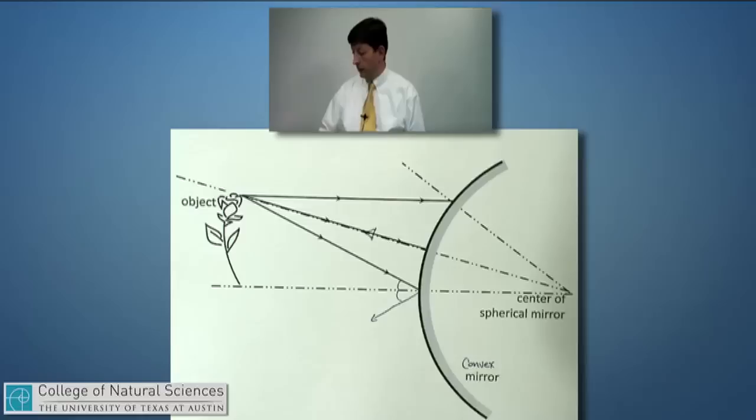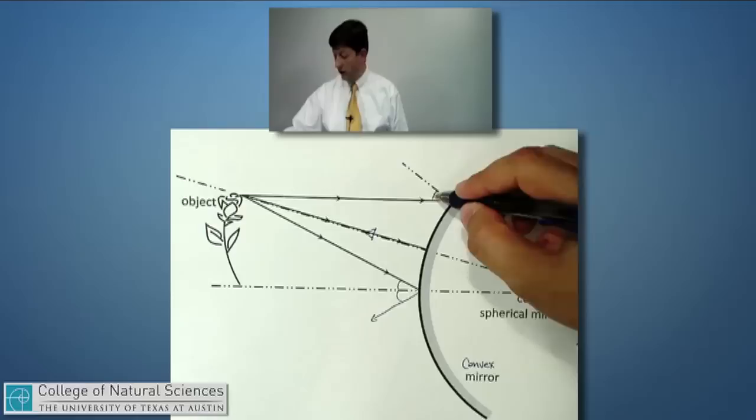The light ray that comes in along the perpendicular right there should reflect straight back. And the light ray that comes in to this point on the mirror, if it's coming in to the perpendicular at a certain angle, it should come off of the perpendicular at a similar angle.